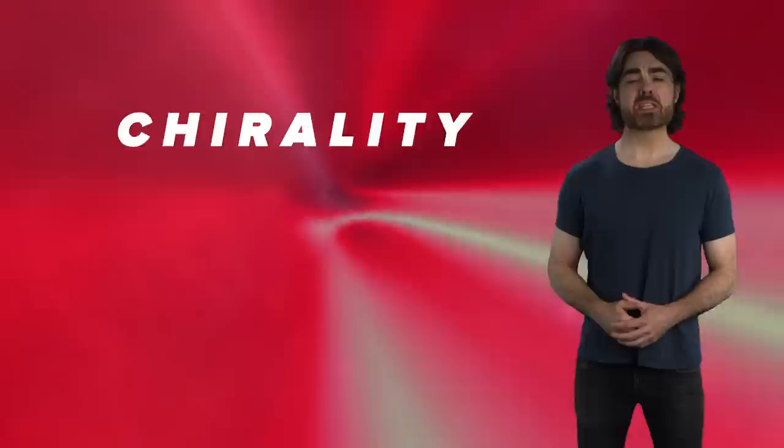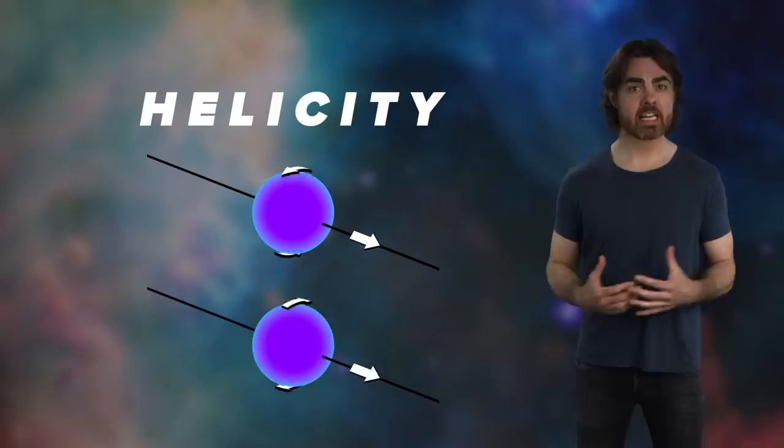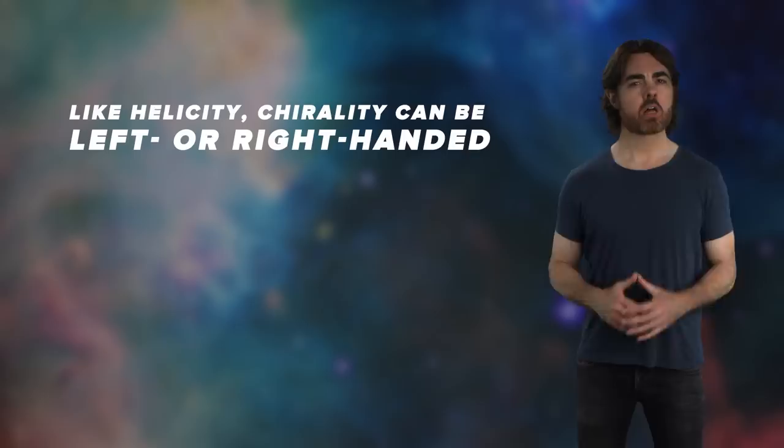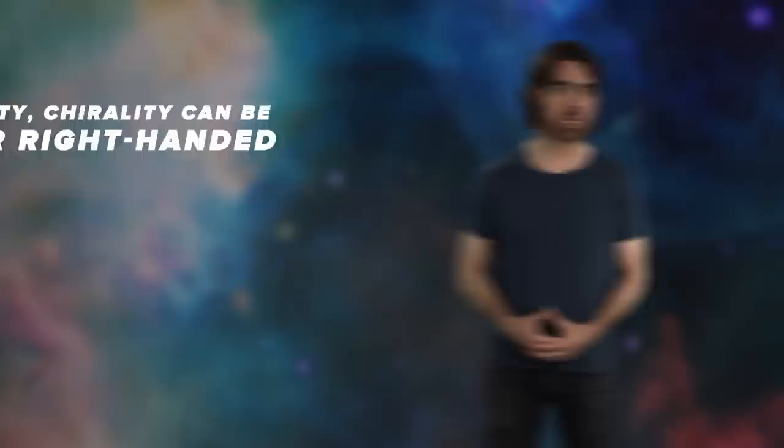The physical interpretation of chirality is pretty abstract. To explain, we need to start with helicity. Helicity is just the direction of a particle's spin relative to its direction of motion. Helicity can be right-handed, which means clockwise rotation, or left-handed, or anticlockwise.